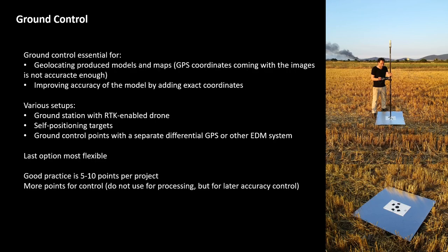When distributing targets in your drone operation area, good practice is to use about 5 to 10 points per project, distributed regularly up to the extent of the operation area. You can use more points, but they will not really improve your results. However, what is good practice is to use additional points for control — distributing 10 to 20 more — and not using them for processing, but comparing their coordinates with those obtained from your resulting 2D or 3D models. This gives you a statistical estimate of accuracy from a controlled dataset.